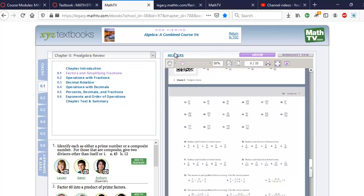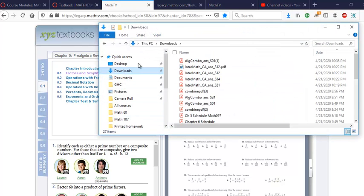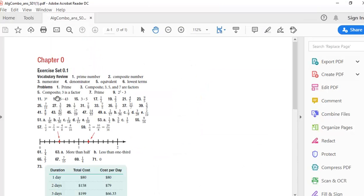If you want to see the answers click here. And this will actually download the answers probably. And if you're on Windows you've got to go to your downloads folder and click there. And there's the answers to 0.1. See that?